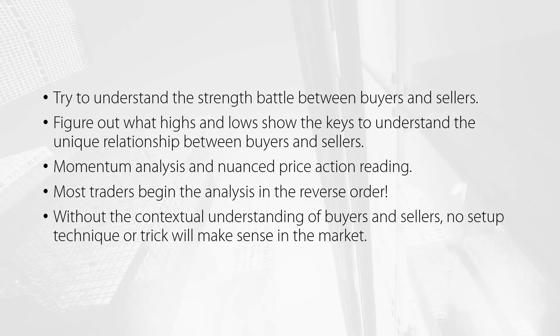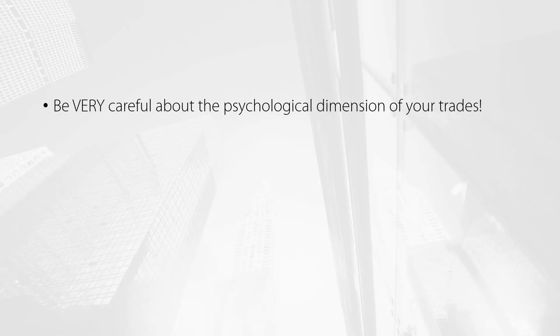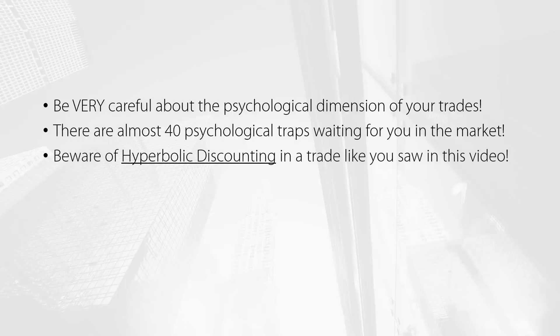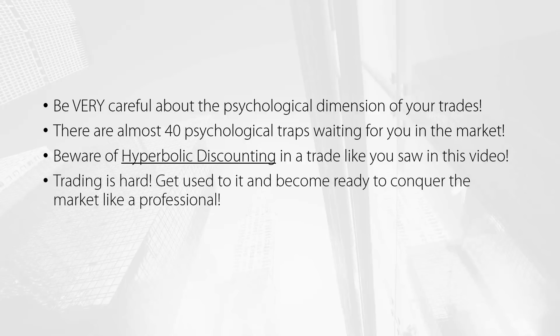Another interesting thing I want to discuss is the psychological dimension in which traders find themselves in a trading situation like this. If you have the Fractal Flow Strategy video course, you know that there are almost 40 different psychological traps that traders must avoid in several market situations. These psychological traps are mostly silent, and that's why they can be so dangerous. One specific cognitive bias we must avoid in a trade like this is called hyperbolic discounting — the tendency to prefer sooner and smaller rewards over later and larger rewards. To maintain yourself balanced through the whole course of a trade like this, you must be able to override that hyperbolic discounting reflex, otherwise you will simply close your trade when you see a small profit in the terminal, which would undermine the whole structure of the trade.